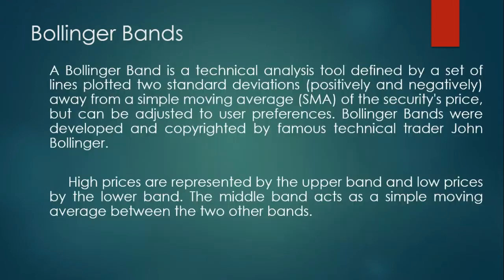It's very easy to understand. So what is a Bollinger Band? A Bollinger Band is a technical analysis tool defined by a set of lines plotted to standard deviation — positive and negative — away from a simple moving average. That means there will be a simple moving average and there will be a positive and negative line of a security's price, but it can be adjusted to the user's preference.